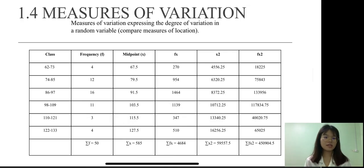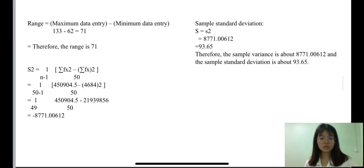Hi, my name is Niengi. My matric is H21A2267. I am taking the part on measures of variation. It is about expressing the degree of variation in a random variable compared to measures of location. Step one is calculate the range using maximum data entry minus minimum data entry. That is 133 minus 62 equals 71.